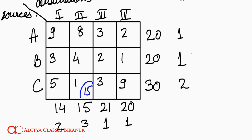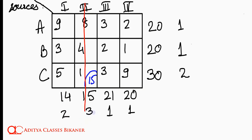Market 2 needed only 15 units and now it has 15 units, so from here on market 2 does not need to enter our discussion. As a result of this assignment, market 2 is completely exhausted, while C who needed to supply 30 units now needs only 15 more units. We now find new penalties because the removal of market 2 may cause changes in the penalty values.